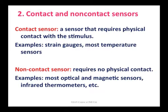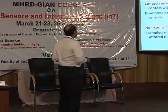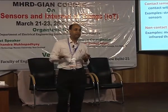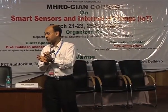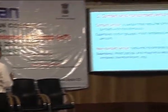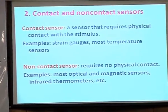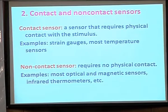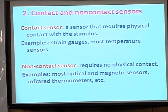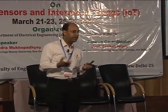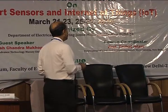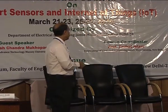Contact sensor means we need physical contact. For example, a strain gauge is famously used for mechanical systems, especially weight measurement — you have to change the dimensions, so you need contact. Temperature sensors other than thermography require physical contact — for body temperature you put the sensor on the body, because the air gap can create a huge problem. Non-contact sensors use magnetic or electric fields and do not need physical contact. Optical and magnetic sensors are all non-contact sensors.